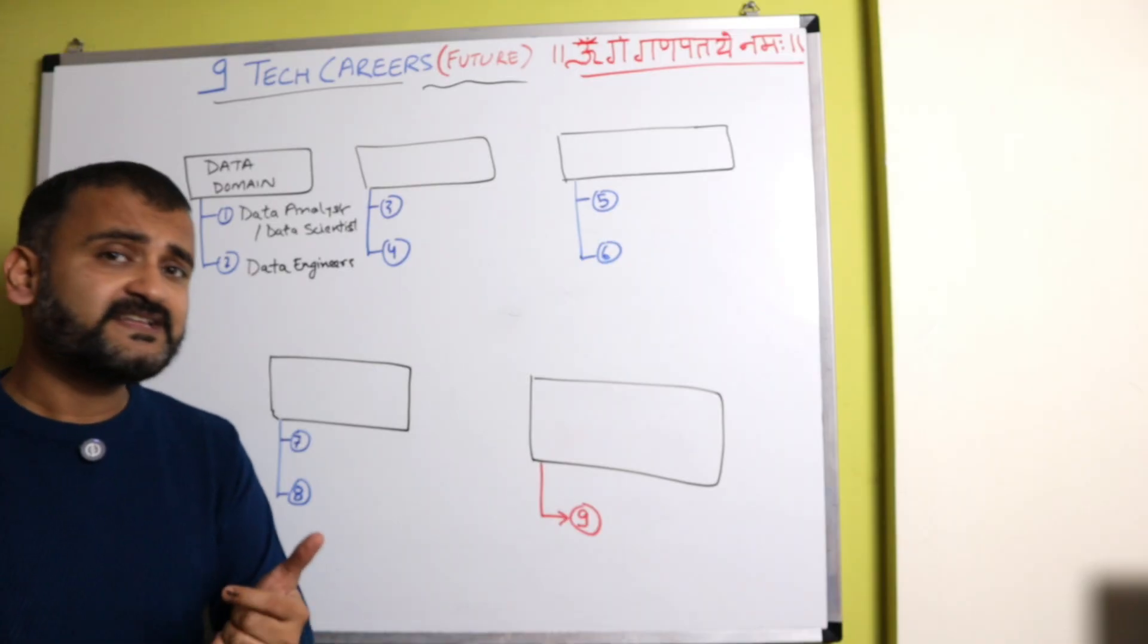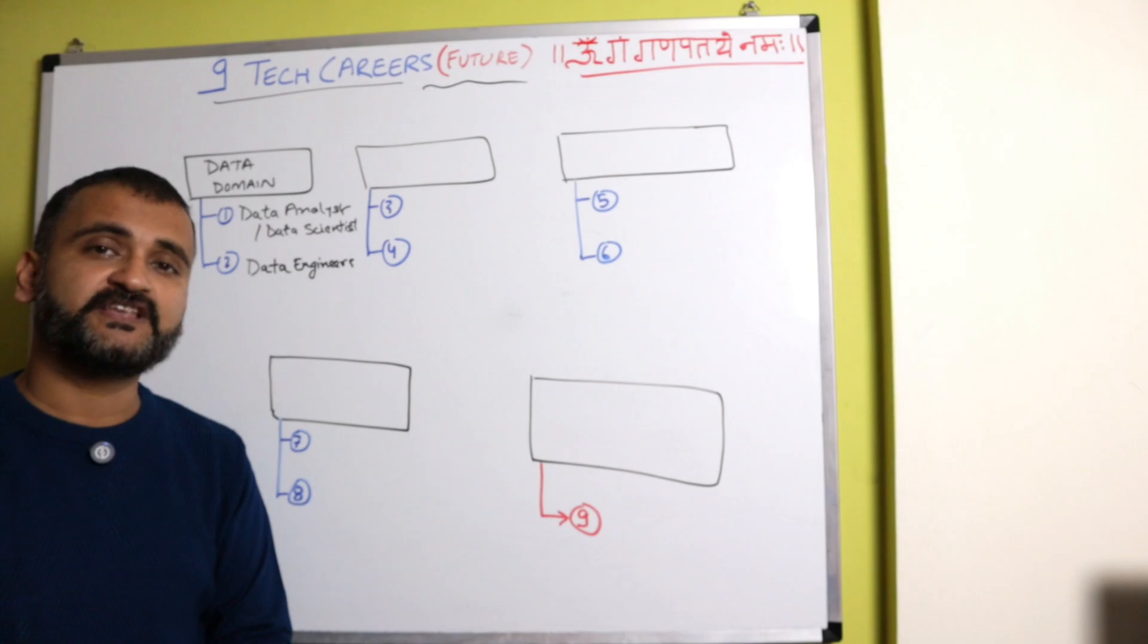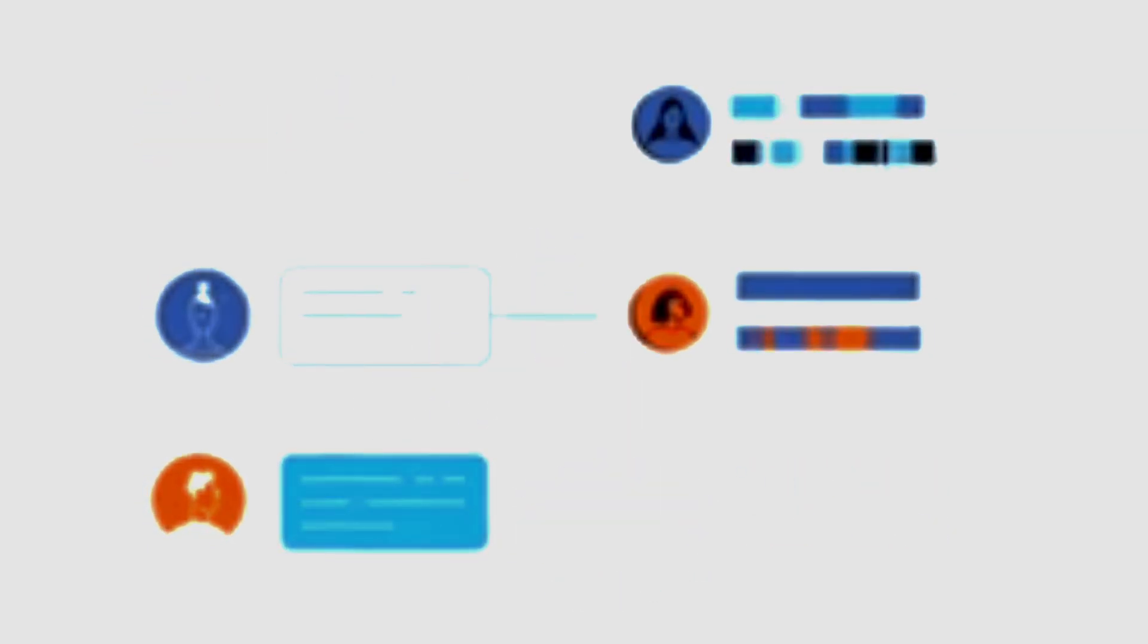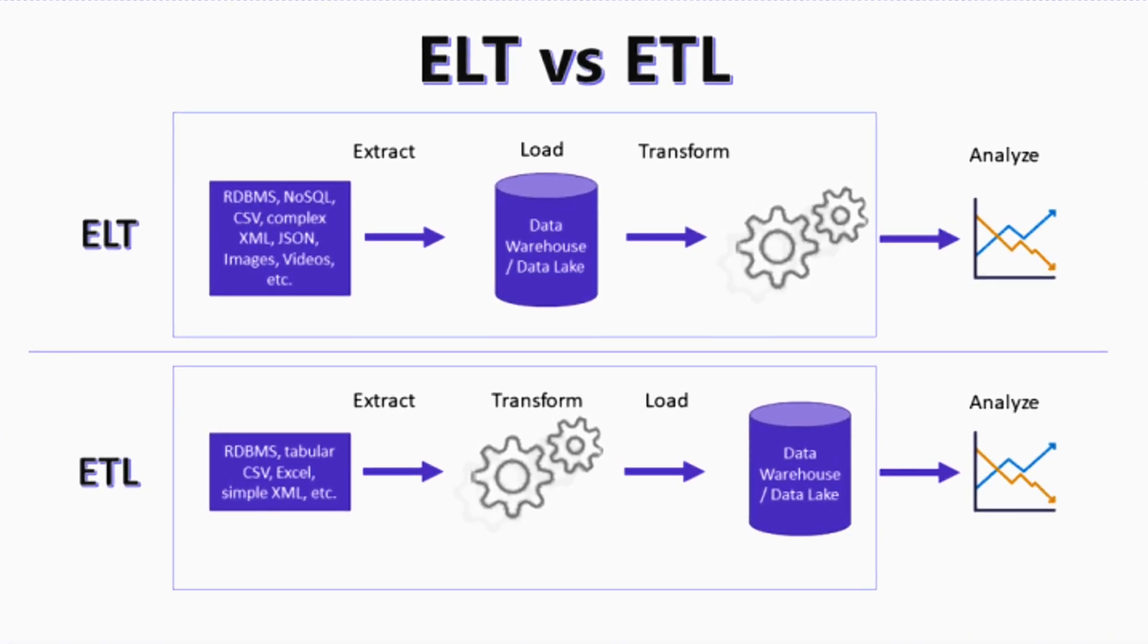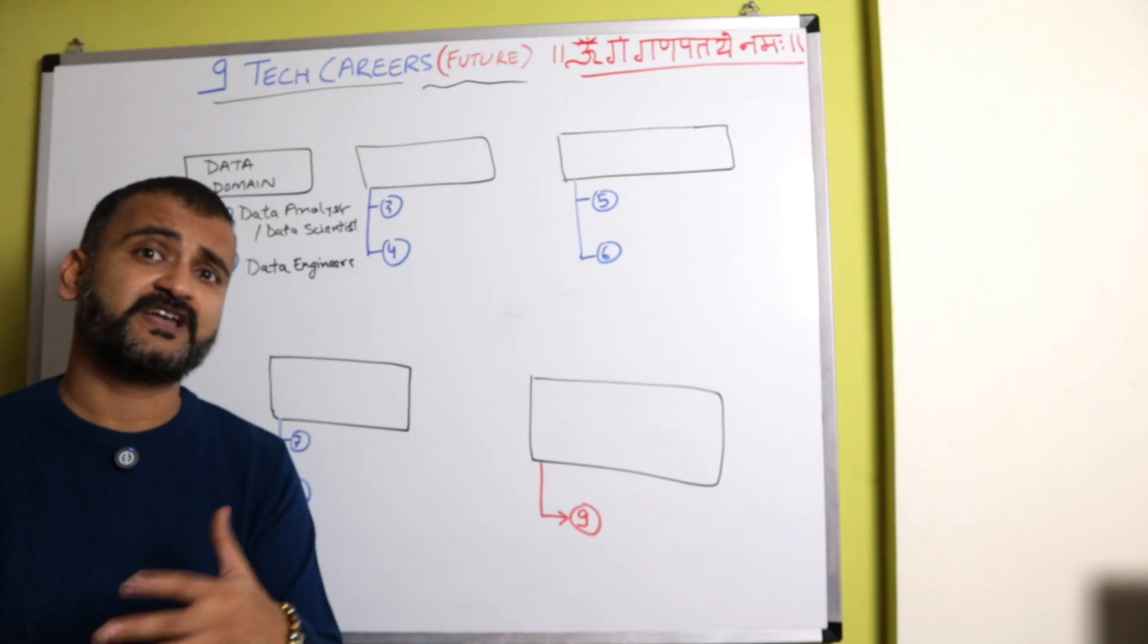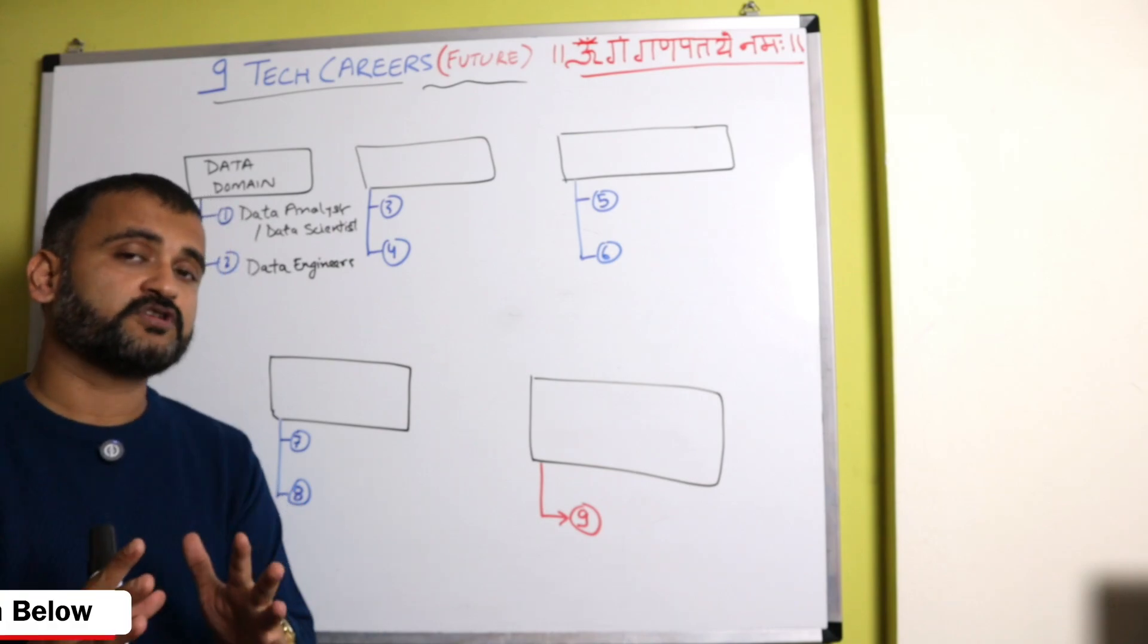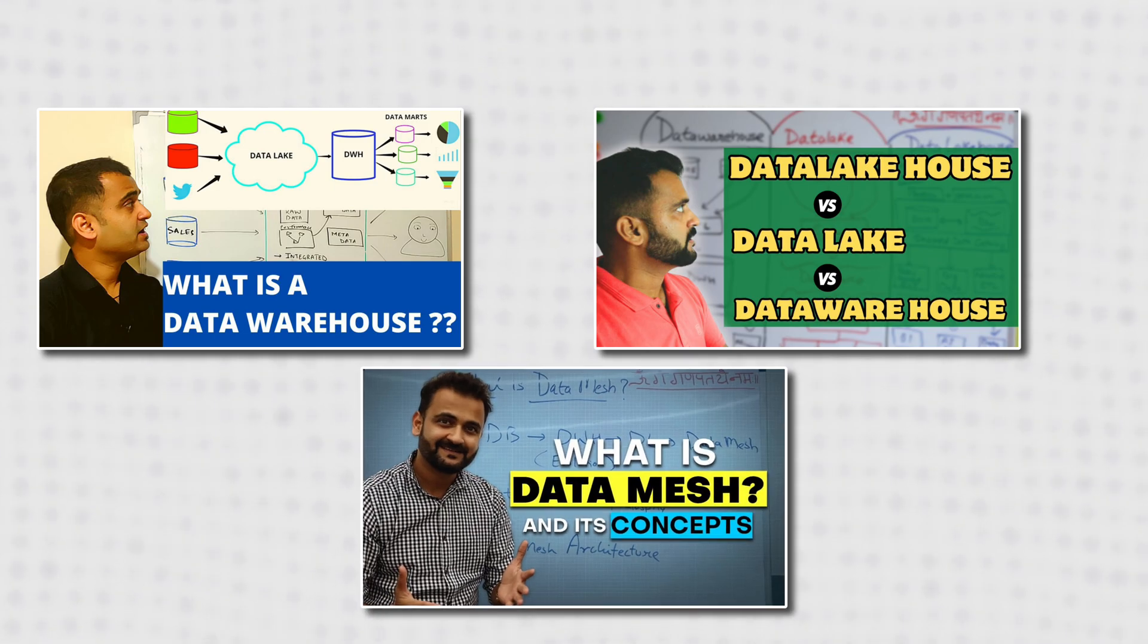The second is data engineers, because data engineers will form the backbone on which this whole analysis will take place. You will need the raw data to be stored, to be processed to a certain standard before data scientists or data analysts could consume it. And that's why you will need data engineers who could develop those kind of ETL or ELT pipelines, taking the data from the source and putting it into your data lakes or data warehouses or data mesh.